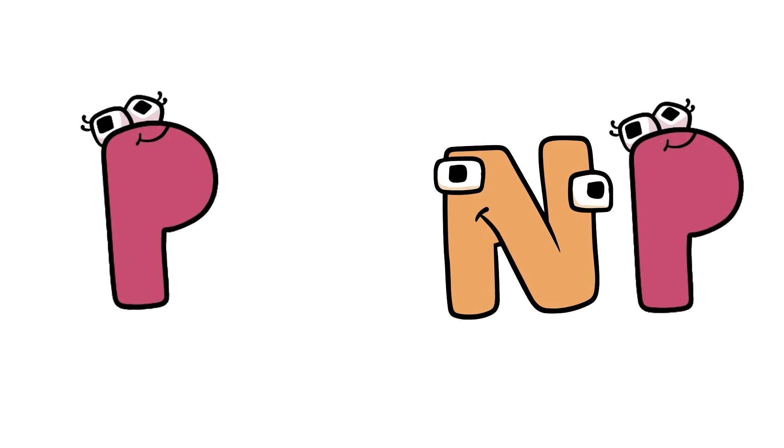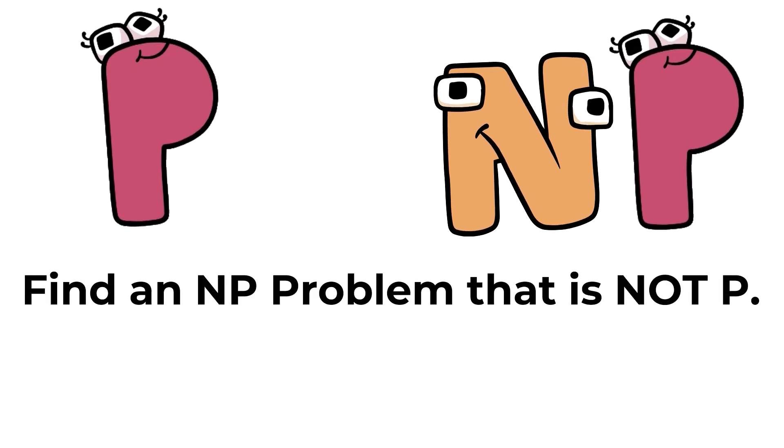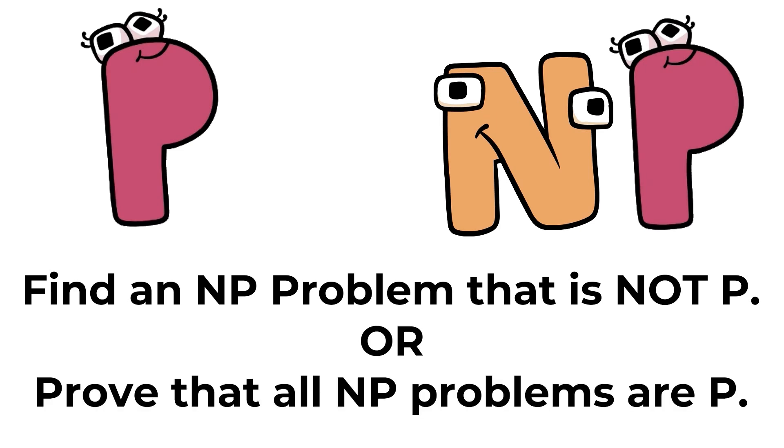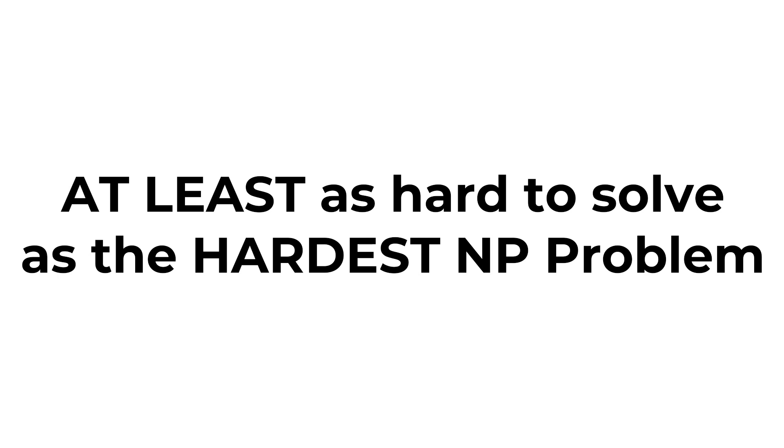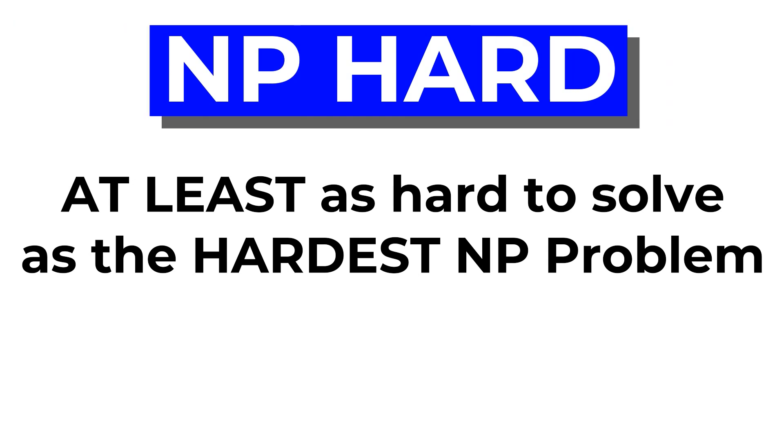However, we still don't know if NP is equal to P or if there are problems in NP that are not in P. Even though proving this would, on paper, be quite simple. Simply find an NP problem that is known for a fact to not be NP. Or show that such a problem cannot exist. And yeah, good luck with doing that, since people have been trying to do this for years, and with a million dollar cash prize, this problem is still completely unsolved. Anyway, if a problem is at least as difficult to solve as the most difficult NP problems, then that problem is said to be NP hard.